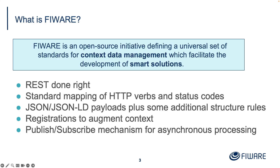So what learning materials are actually available? FIWARE is an open source initiative for defining the set of standards for context data management. This is usually reduced to five bullet points if you want someone to understand what FIWARE is in 30 seconds. It's a REST API, which is usually bound to HTTP. There are other bindings available for NGSI according to the ETSI specification, but it's usually based on HTTP, and it's very opinionated — it does HTTP verbs the way you're supposed to, and it doesn't give you back payloads when you're not expecting them. The structure of the data is structured JSON.